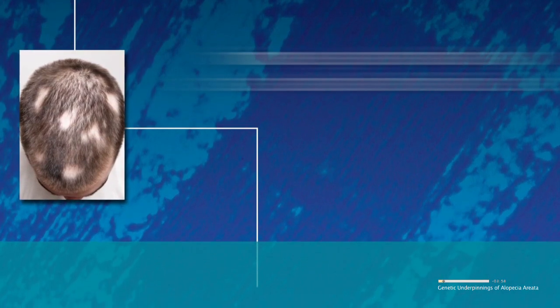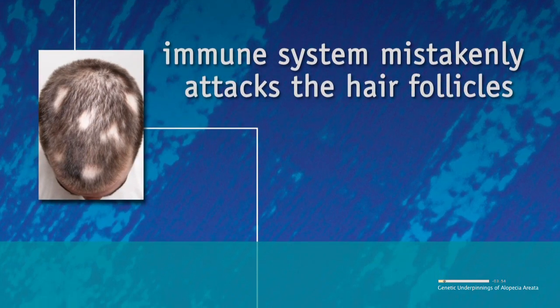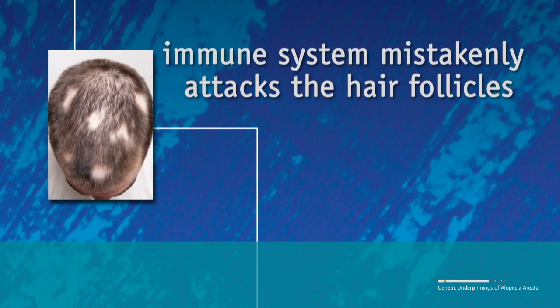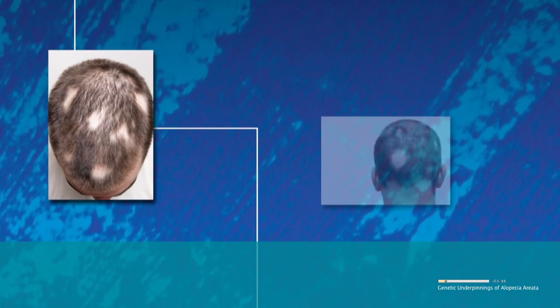But in alopecia areata, the immune system mistakenly attacks the hair follicles, the tiny cup-shaped structures from which hairs grow. This can lead to hair loss on the scalp and elsewhere.